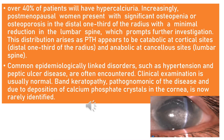Over 40% of patients will have hypercalciuria. An increasingly common presentation is postmenopausal women with significant osteopenia or osteoporosis in the distal one-third of the radius, with minimal reduction in the lumbar spine, prompting further investigations. This distribution arises because parathyroid hormone appears to be catabolic at cortical sites like the distal one-third of the radius, and anabolic at cancellous sites like the lumbar spine. Common epidemiologically linked disorders such as hypertension and peptic ulcer disease are often encountered.